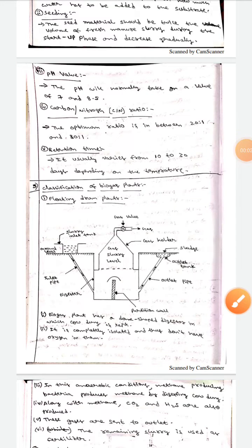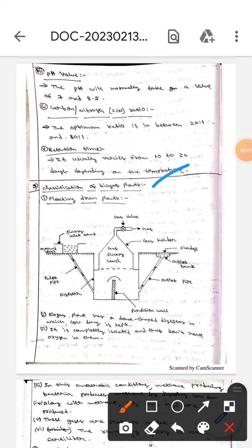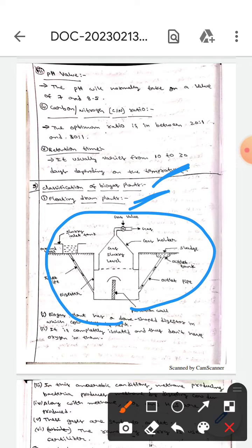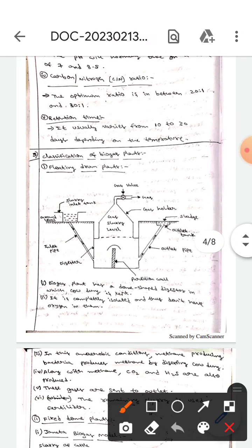Hello guys, I hope you are all fine. Today we are here to discuss the classification of biogas plants. The first one is the floating drum plant. This diagram represents the floating drum plant. Here, the bioplant has a dome-shaped digester in which cow dung is kept. It is completely isolated and thus will not